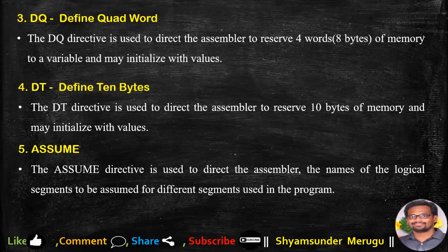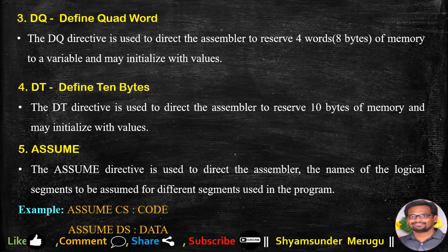The ASSUME directive is used to tell the assembler the names of logical segments to be assumed for different segments used in the program. For example, 'ASSUME CS' for the code segment and 'ASSUME DS' for the data segment.